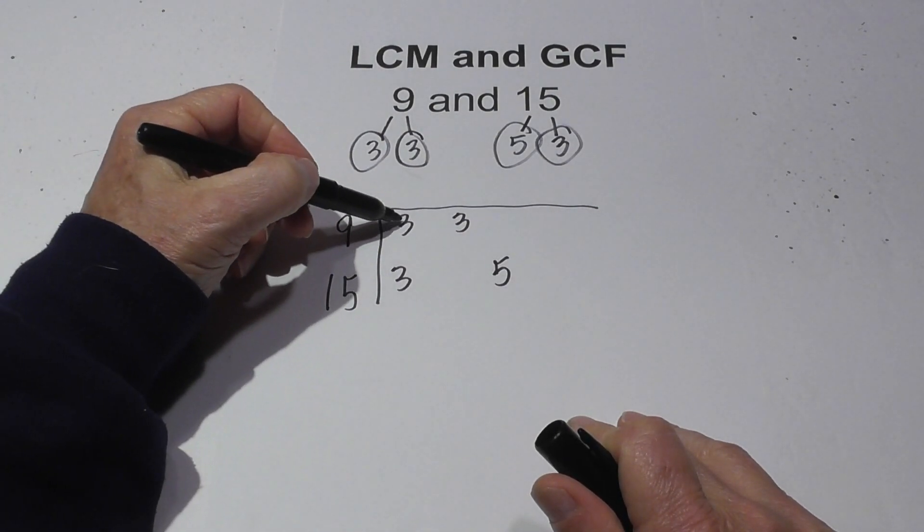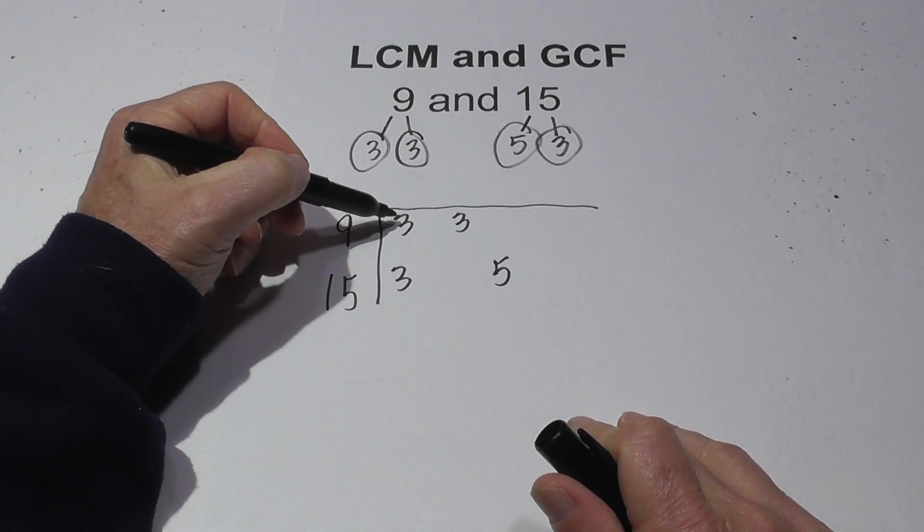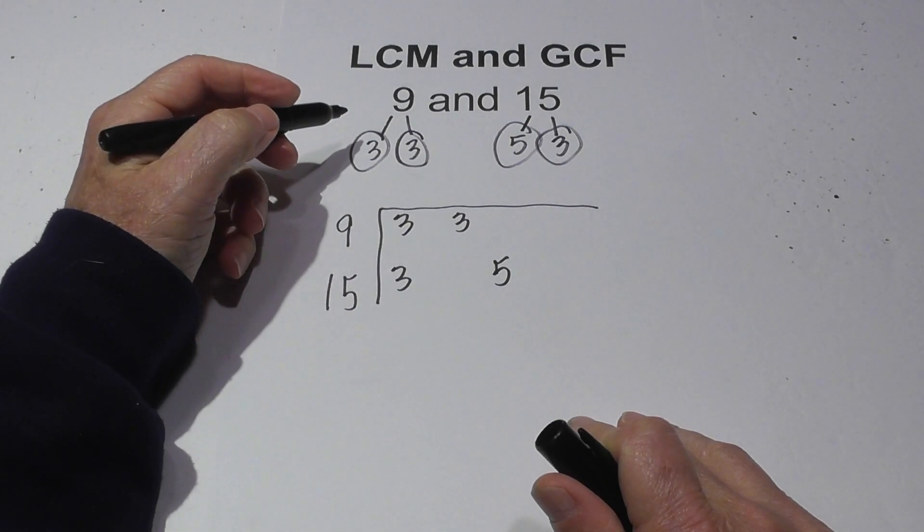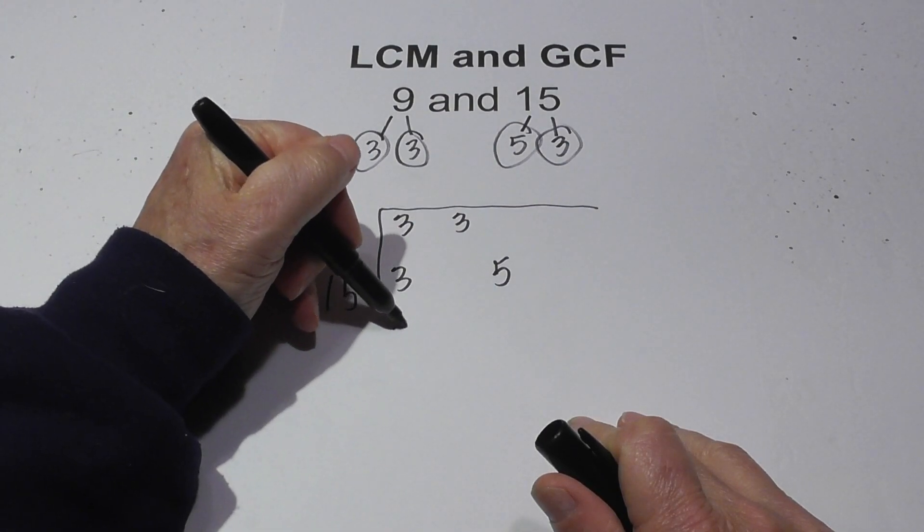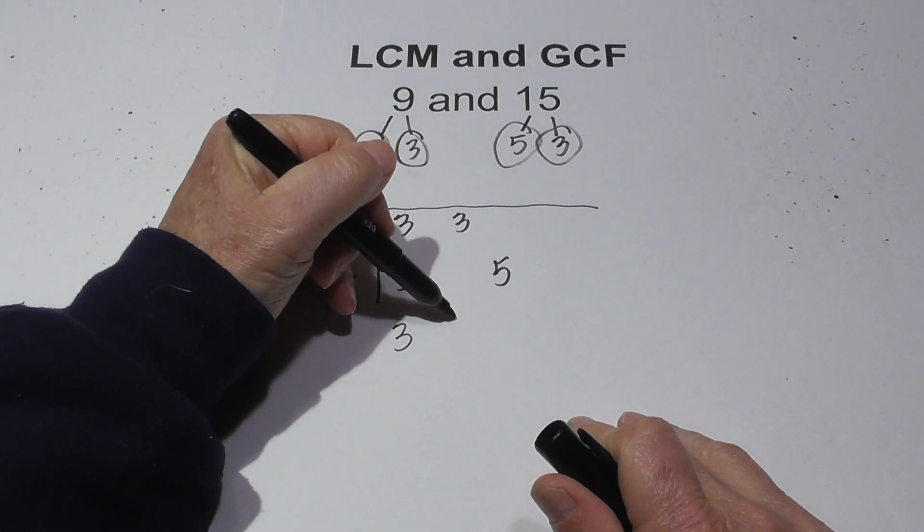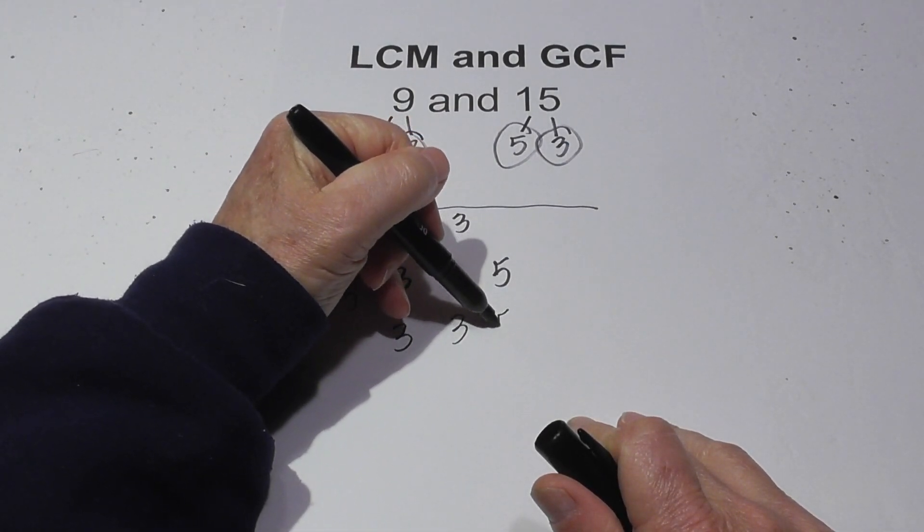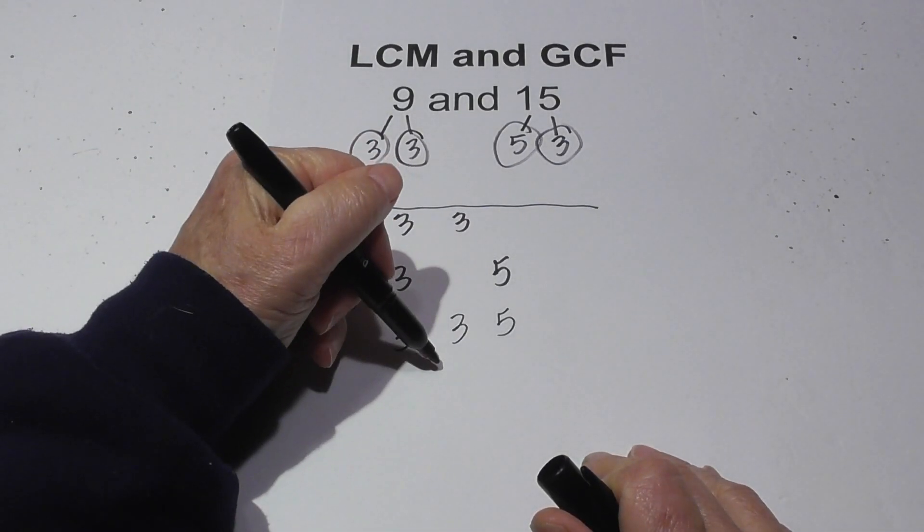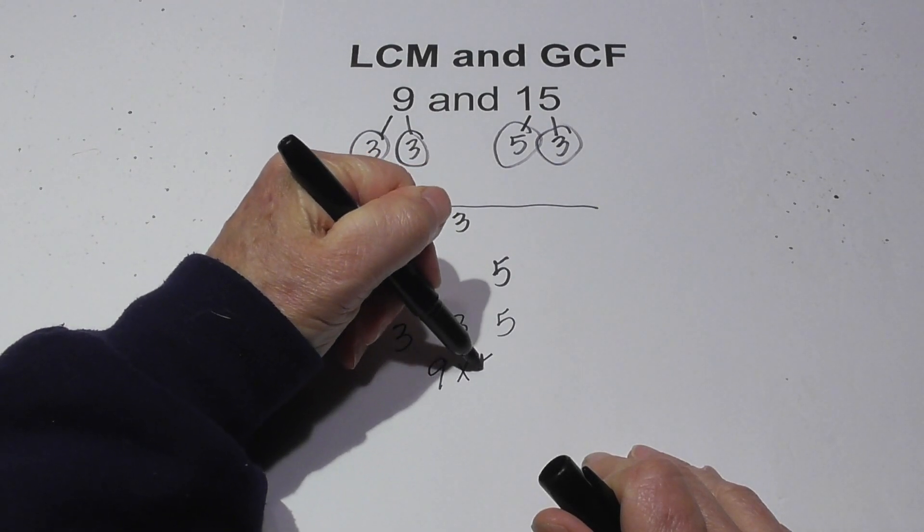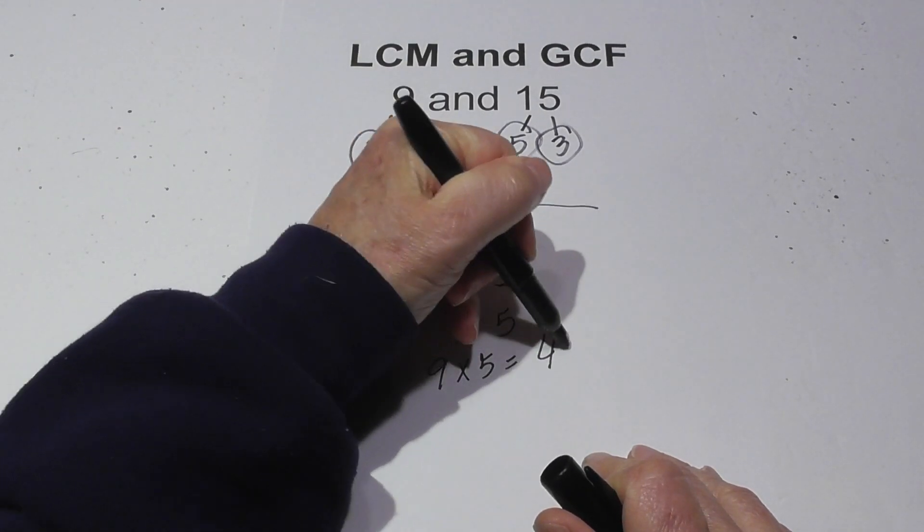So then for the LCM I just bring the numbers down. And if I have 2 or more then I only bring 1 down. So I have 2 3's here so I'll bring down a 3, bring down a 3, bring down a 5. Now I just multiply these together for the LCM. 3 times 3 is 9 times 5 equals 45.